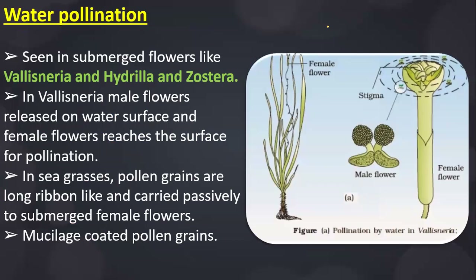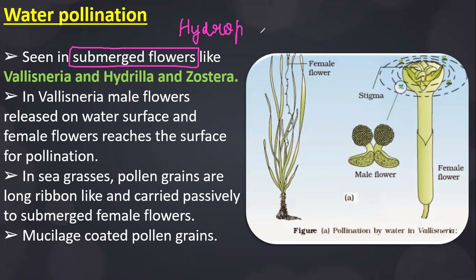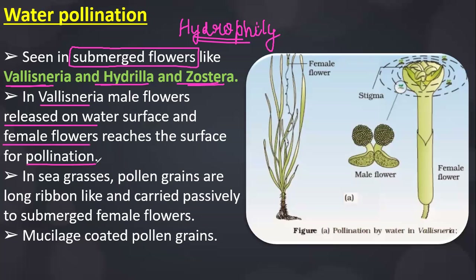Water pollination — hydrophily — is seen in submerged plants like Vallisneria, Hydrilla, Zostera, etc. In Vallisneria, the male flowers are released onto the water surface, and the female flowers reach the surface for pollination. The pollen grains float in the water current, and when the female flower matures, it also comes up to the surface for pollination.